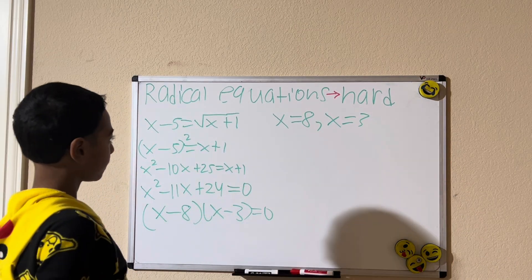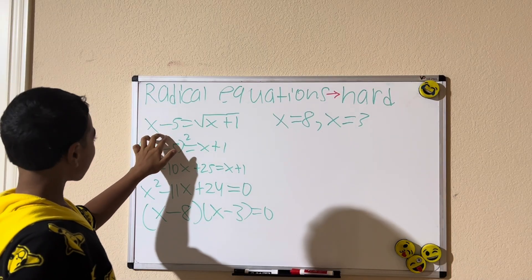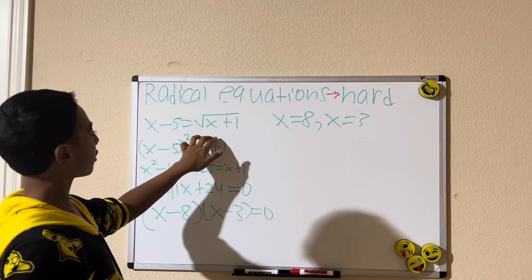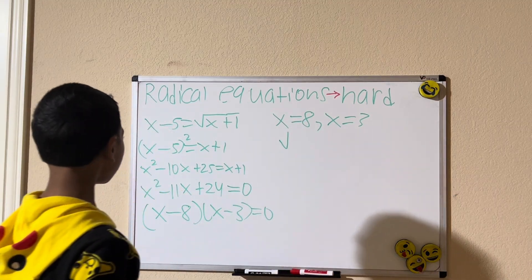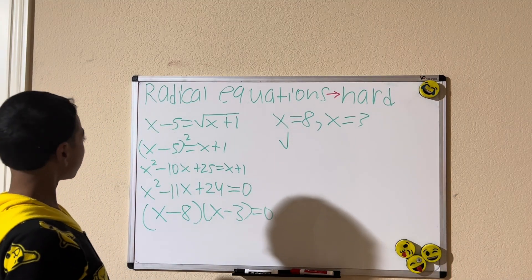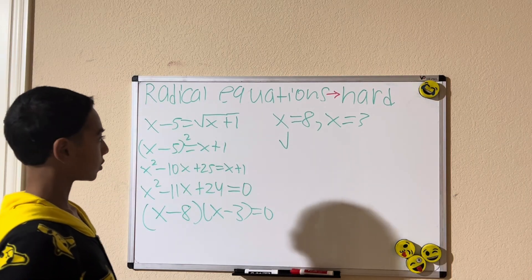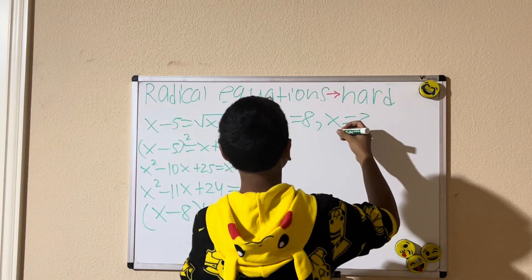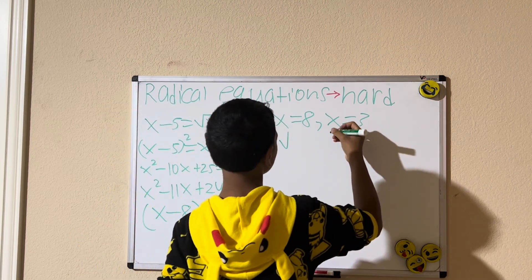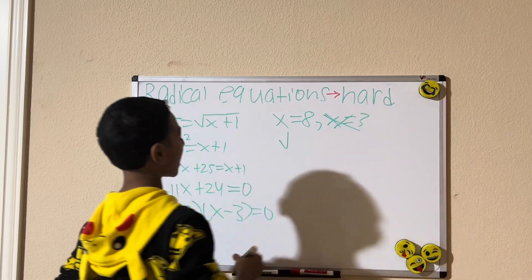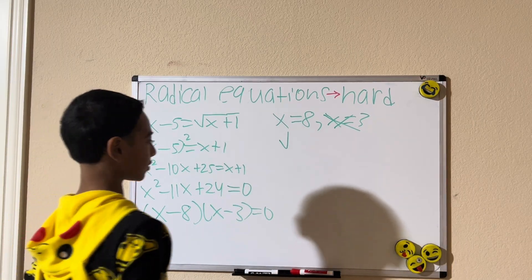Let's double-check. For x equals 3: we get 3 minus 5 equals negative 2, and the square root of 3 plus 1 equals the square root of 4, which is 2. Negative 2 does not equal 2, so x equals 3 is extraneous. The square root of a number can never be negative, so we cannot have x equals 3. Our only solution is x equals 8.